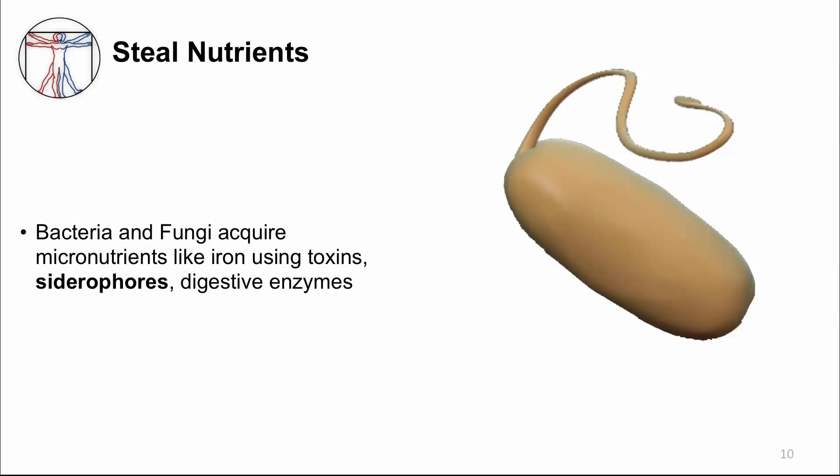For microbes to persist in a host, they not only have to avoid being killed by the immune system, but they also need to acquire the things they need to stay alive. For example, bacteria require certain micronutrients like iron in order to stay alive. Iron is sequestered by the human body and not readily available, so bacteria that can persist in the host have overcome this by several means.